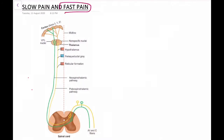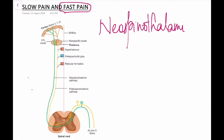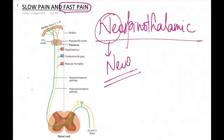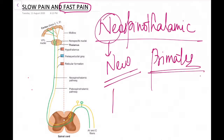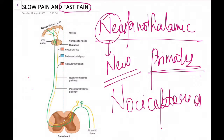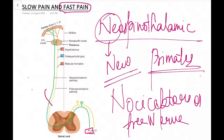Next is the fast pain pathway, also called the neospinothalamic pathway. 'Neo' means new, and this fast pain pathway is most developed in primates. The receptors here are nociceptors, or free nerve endings. The first-order neurons are the A-delta fibers.